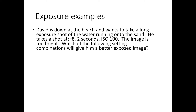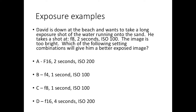David is at the beach and wants to take a long exposure shot of water running onto the sand. He takes a test shot at F8, two seconds, ISO 100, and the image is too bright. This is a multiple-choice question: which setting combination will give him a better-exposed image? The correct answer is C: F8 keeps the aperture the same, so that hasn't changed the brightness at all. Cutting it down to one second is still a long exposure for water movement, but it makes the image dimmer because the sensor is exposed for less time, and keeping ISO at 100 means that won't change anything either.